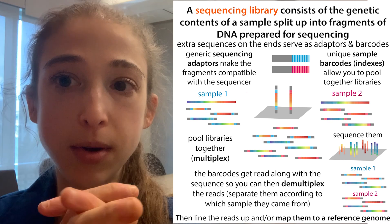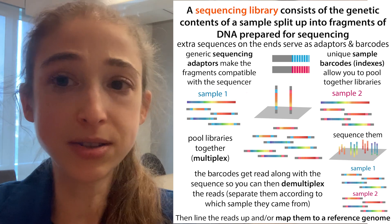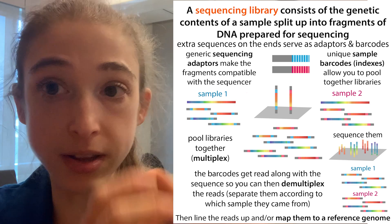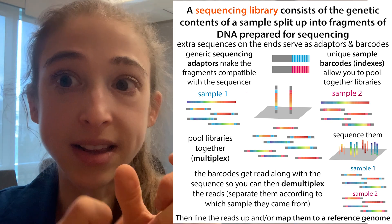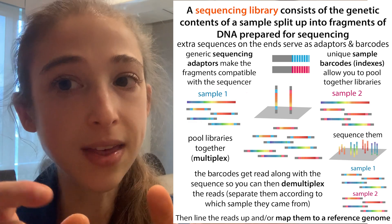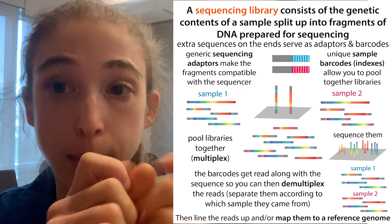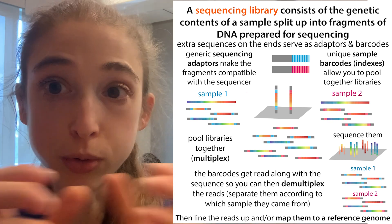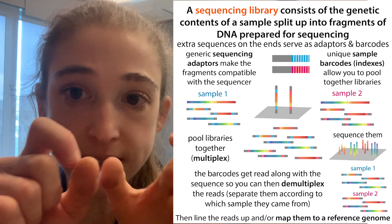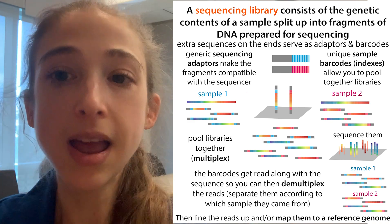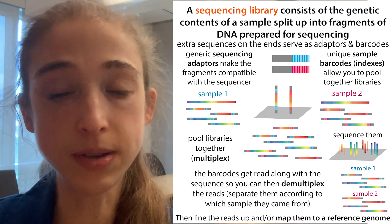When you go to sequence them, you sequence them all together, which saves space and resources because those sequencers can give you far more reads than you would need from one single population. By pooling them together, you can sequence them all at once — the sequencer is totally capable of that — and then you just have to computationally separate them out based on the barcodes. We call it multiplexing when we pool these together, and then we demultiplex them and separate reads with one barcode from reads with another, so we can compare the levels of things in one group versus the other.